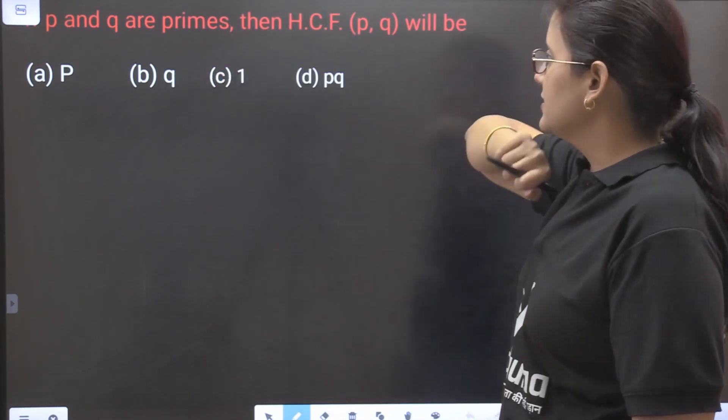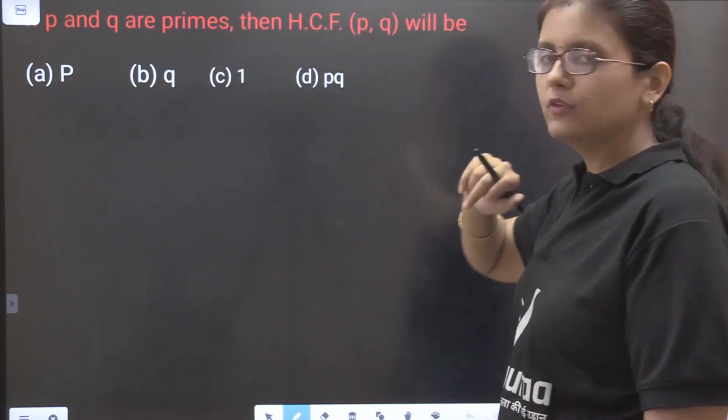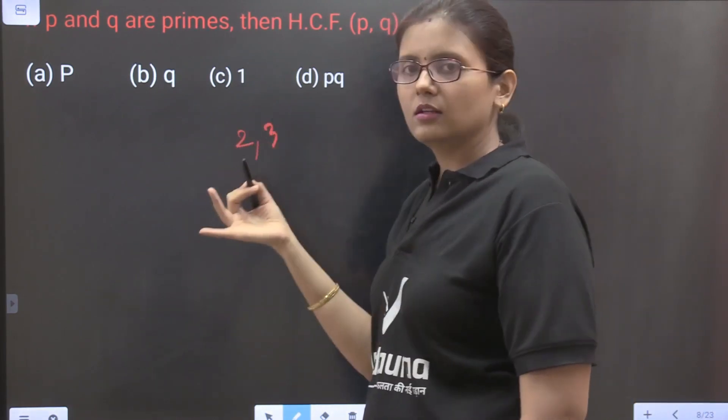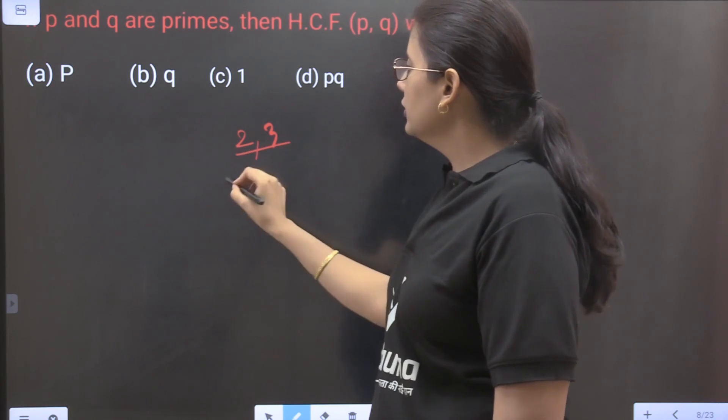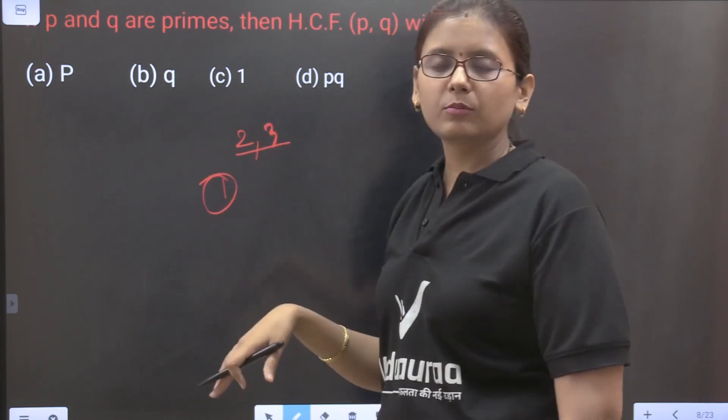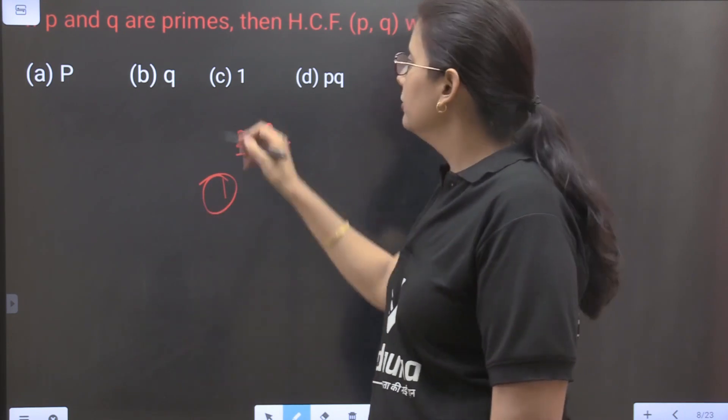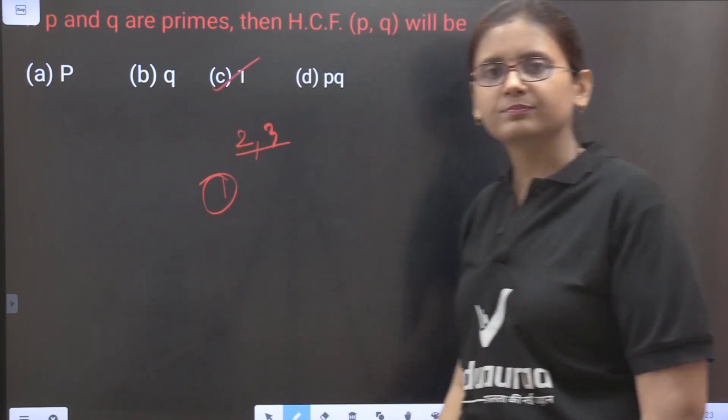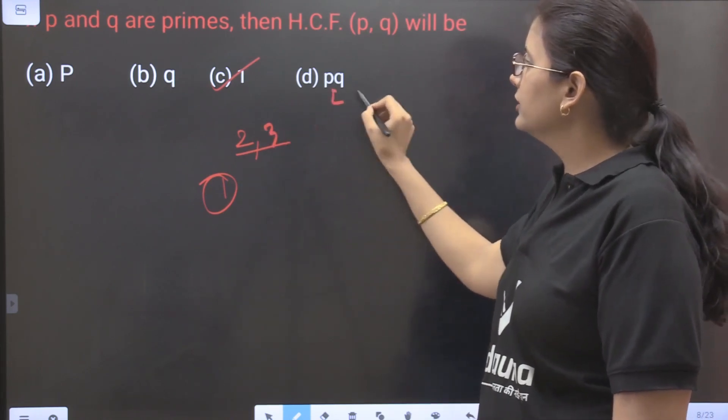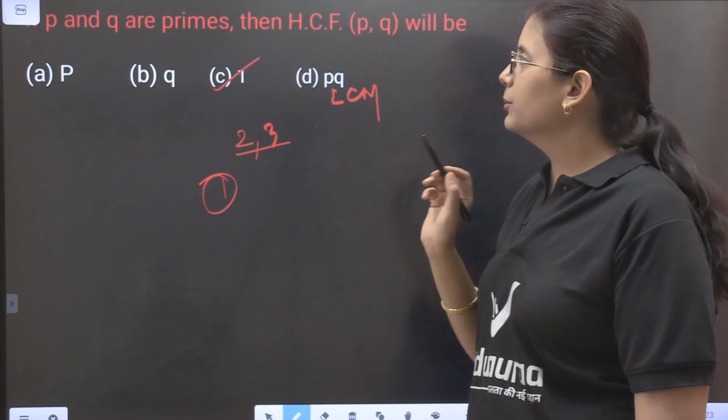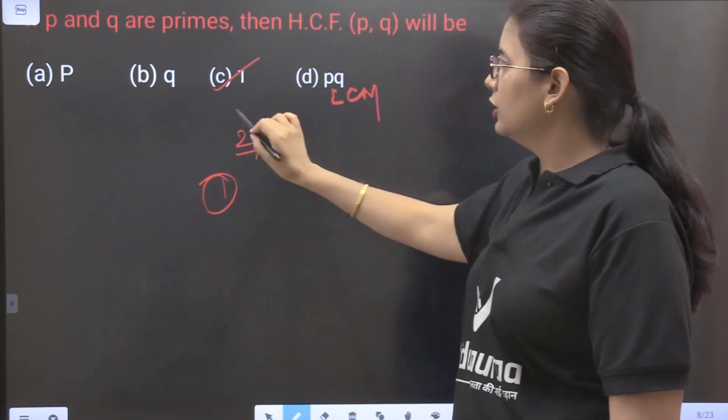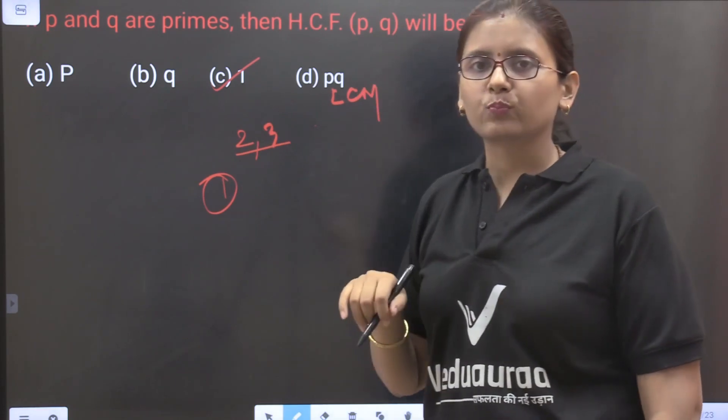Now coming to the next question. If P and Q are primes then HCF of P and Q will be, if there are two numbers which are prime, let it be 2 and 3, then their HCF will be 1 only. Because they are prime they are not divisible by any other number except 1, so HCF will be 1. And what will be the LCM? Of 2 and 3 it will be 2 into 3, 6. So this will be the LCM. So always remember when you are given that P and Q are primes then HCF will be 1 and LCM will be PQ.